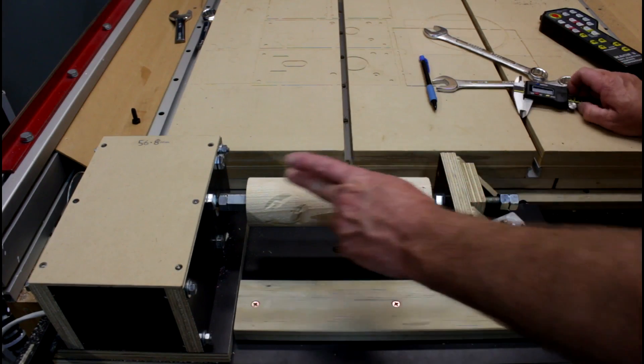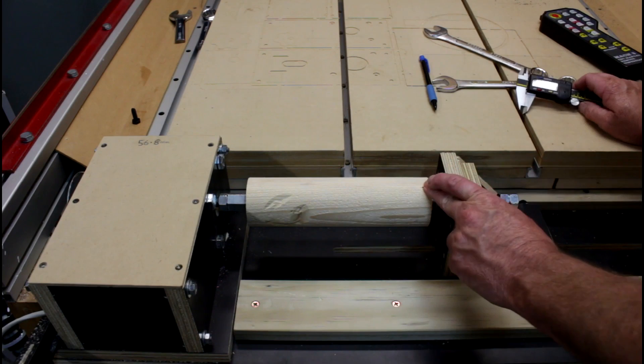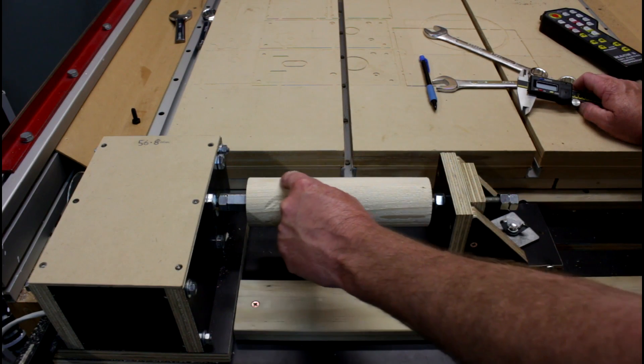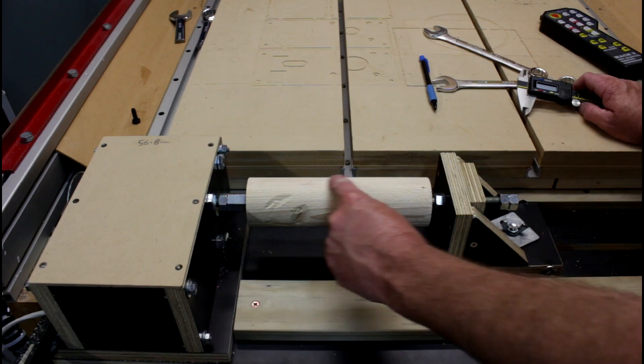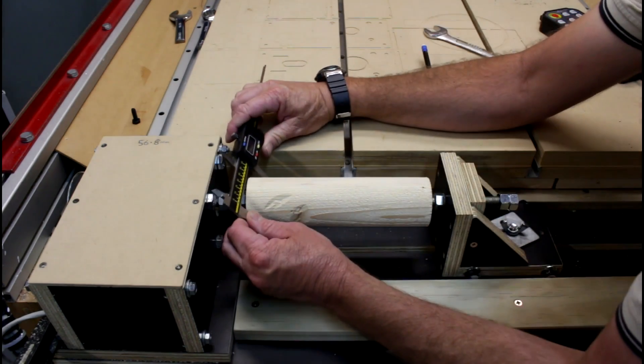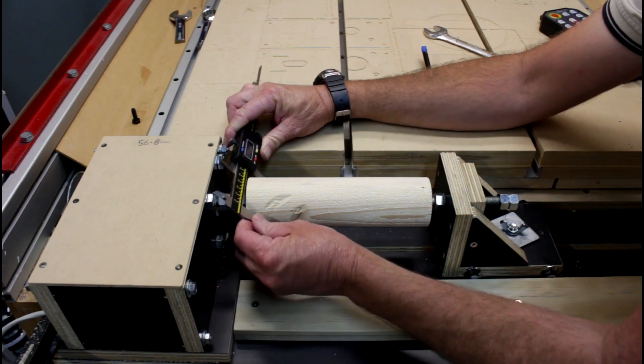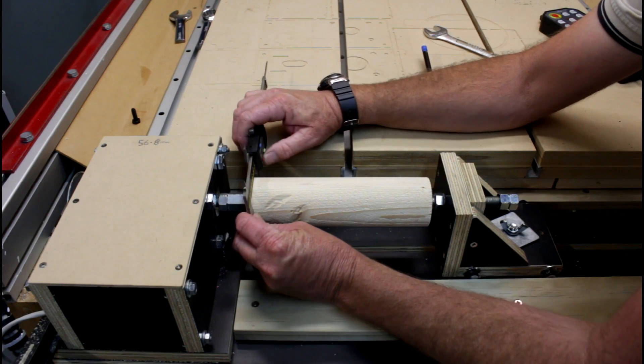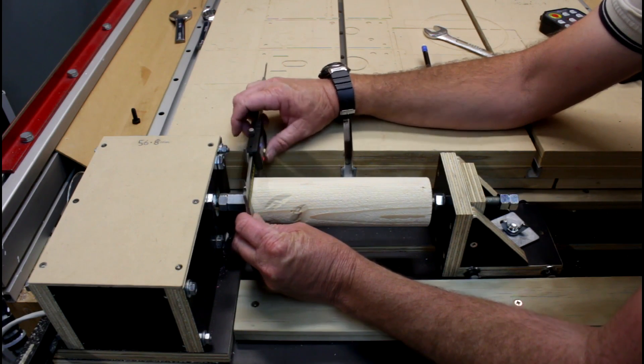Having got everything set up where I thought it should be, I then ran a rounding profile over this piece of wood here. At the end of that profile, I put the calipers around the piece of wood and zeroed the calipers.